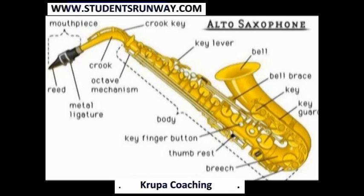Mezzo-soprano means the mid-range. This instrument is a saxophone, S-A-X-O-P-H-O-N-E. A saxophone is a woodwind instrument with a metal body. The picture itself has the word — this is an alto saxophone. You are also seeing the word metal ligature on the instrument.